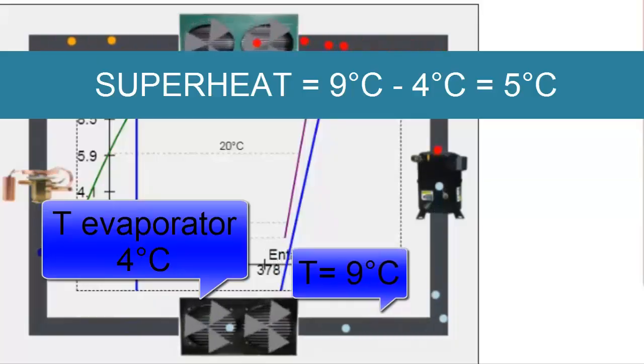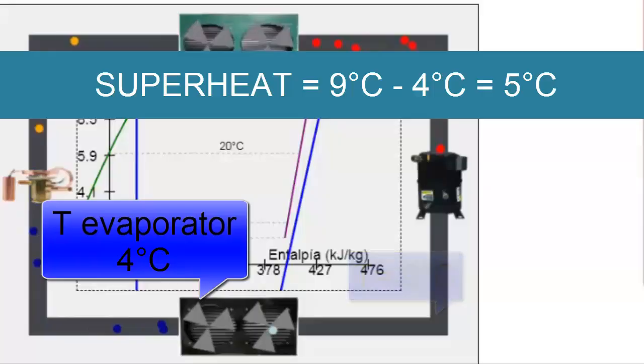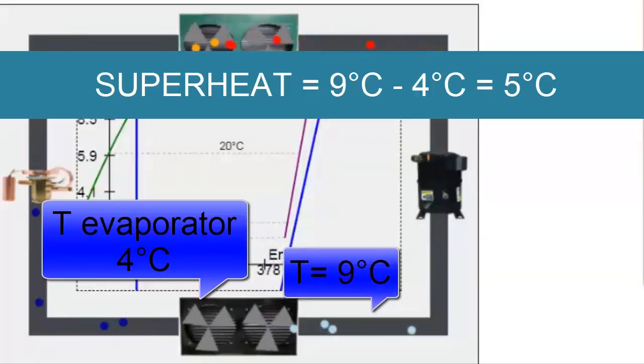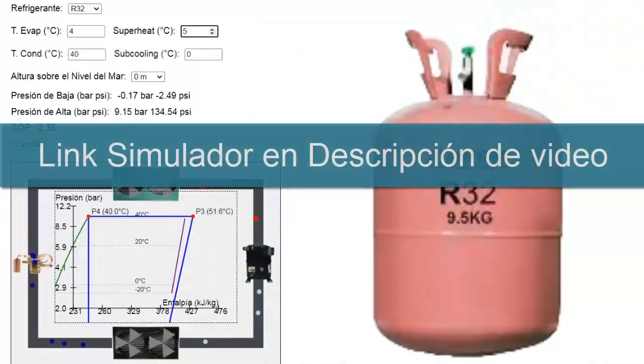On the other hand, with a lower thermal load or fewer people in the room, the superheat will be less than 5 degrees Celsius, and can even reach 0 degrees Celsius when the cooling load is very low.